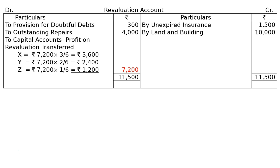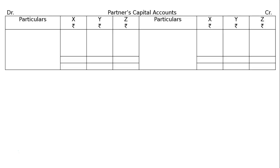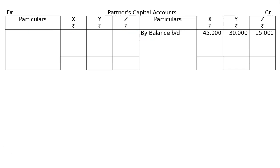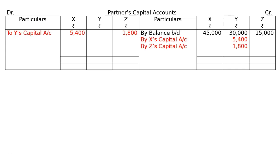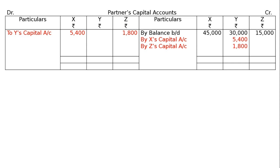In the capital accounts: goodwill entry — X's and Z's capital accounts debited; Y's capital account credited. Y receives by X's capital account 5,400 and by Z's capital account 1,800. X debits 5,400 and Z debits 1,800 for goodwill.